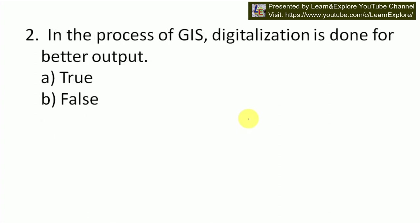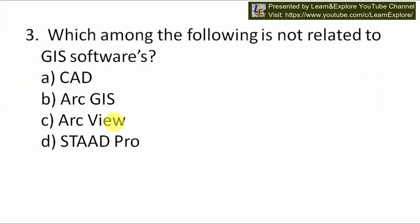Next question: in the process of GIS, digitalization is done for better output. Digitalization involves the conversion of data from raster to vector so that the hard data can be obtained in software. It can be done either by manual interpretation or by digital scanning. So digitalization is definitely done for better output in GIS — our answer will be A, true.